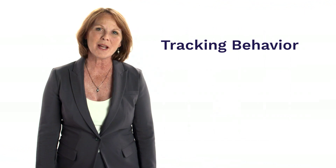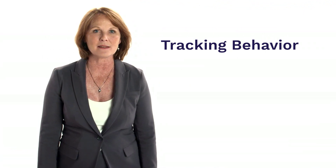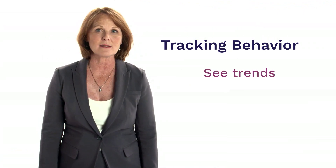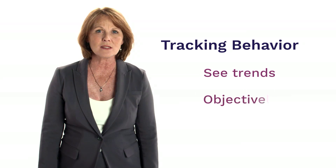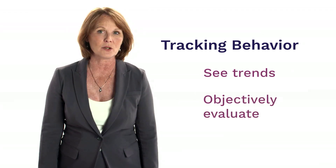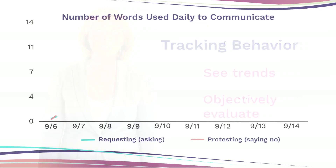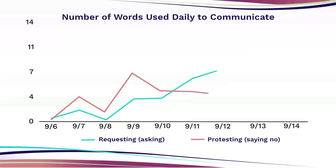When we track behavior on an ongoing and consistent basis, we're able to see trends, objectively evaluating whether a child's behavior is increasing, decreasing, or remaining at the same level. Creating visual displays such as graphs makes this even easier. See how exciting it is to see progress in this way?